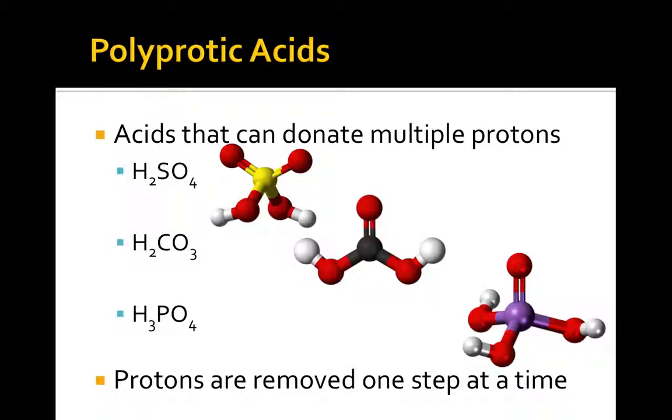Polyprotic acids dissociate one step at a time, with the conjugate base from the first step being used as the acid in the next step, and so on.